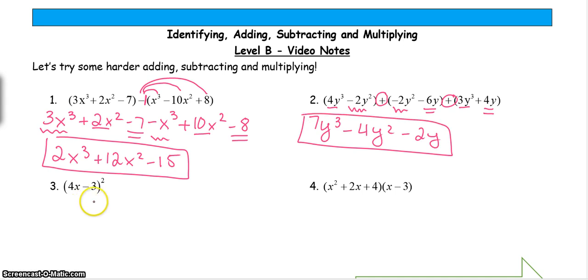All right, for this next one, we have a binomial, a parentheses where there's two terms, and it's squared. Whenever you square something, remember that means you're multiplying it by itself. So this is the same thing as having (4x - 3) times (4x - 3).